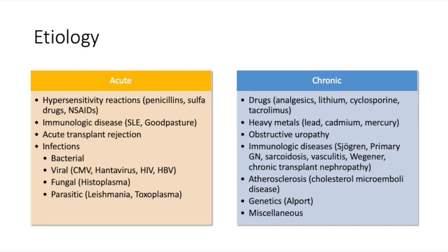Regarding etiology, acute TIN is mostly caused by hypersensitivity reactions most commonly associated with penicillins and NSAIDs, immunologic disease, transplant rejection, and various infections — either bacterial, viral, fungal, or parasitic. Chronic TIN, on the other hand, is associated with drugs as well — NSAIDs and immunosuppressants, heavy metals like lead, obstruction from prostate cancer or calculi, immune disease, atherosclerosis, genetics, and other various causes.